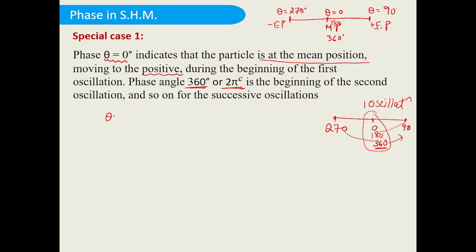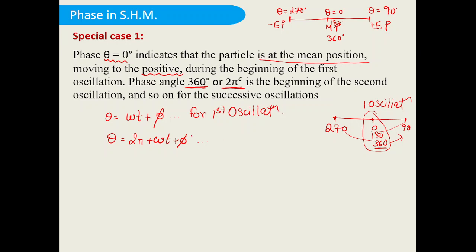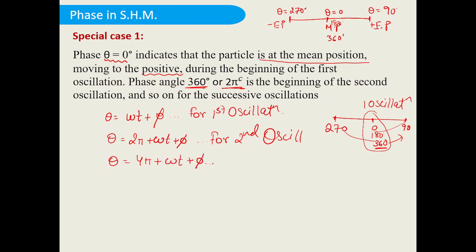For the first oscillation, phase θ = ωt + φ. For the second oscillation, θ = 2π + ωt + φ. For the third oscillation, θ = 4π + ωt + φ. So for each successive oscillation, you add 2π to the phase.